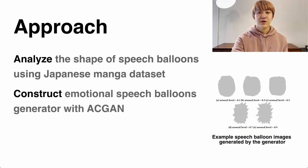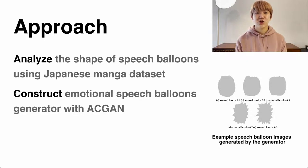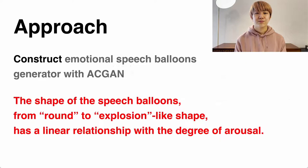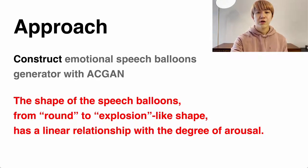Next, based on these findings, we used the neural network HGGAN to construct a system that generates speech balloons corresponding to an input emotional arousal value. Then, to validate the system, we evaluated and analyzed five images generated by HGGAN using crowdsourcing. We found that the shape of speech balloons, from a more round shape to a more explosion-like shape, has a linear relationship with the degree of arousal.